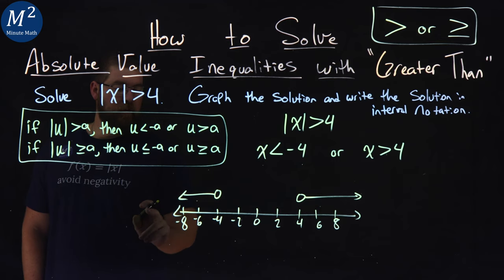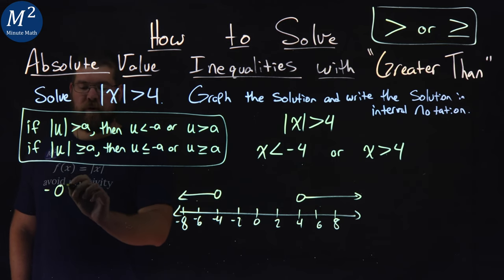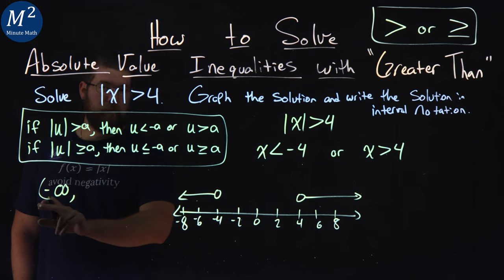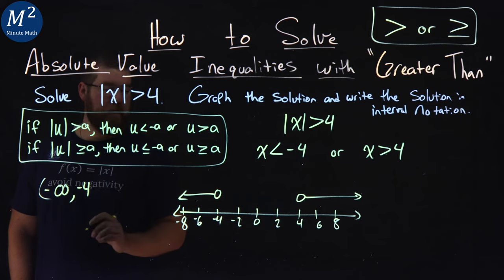Start all the way to the left. We have negative infinity, remember parentheses with infinity, to negative 4. We cannot equal negative 4, so we put a parenthesis there.